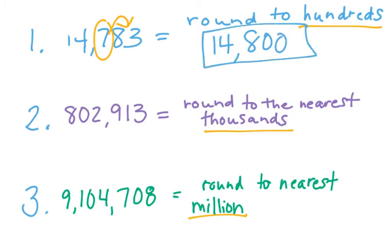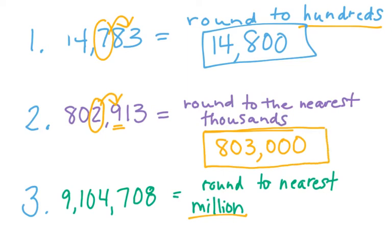Rounding to the nearest thousand, circle the number in the thousands. Look one to the right, five or more, raise the score, four or less, let it rest. It's five or more, so it's going to round up to three and everything after it turns to a zero. So rounded to the nearest thousand is 803,000.